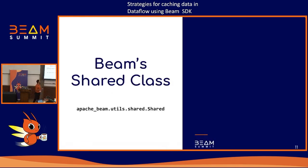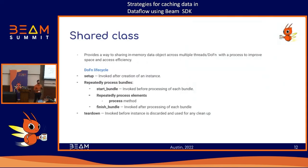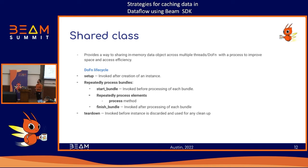The other option is the Beam shared class. Processing in Beam is mainly expressed as DoFns, which have multiple methods invoked at different lifecycle stages. When a DoFn instance is created, the first method called is setup. DoFns process elements in small batches called bundles, so you also have start bundle, then process element which runs for each element in the bundle, and then finish bundle after the bundle completes.